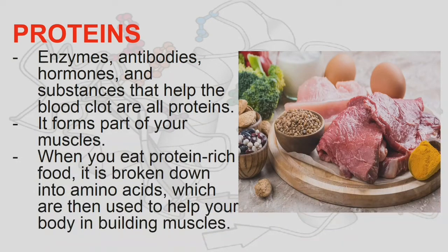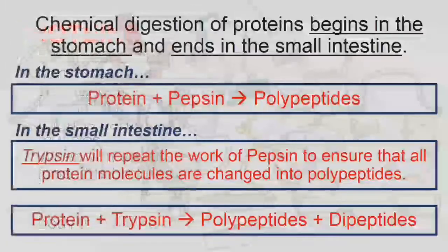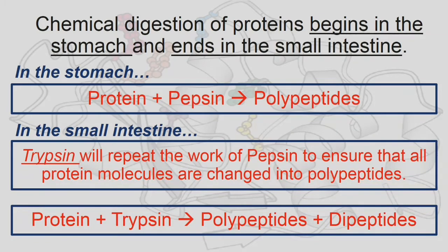Proteins — including enzymes, antibodies, hormones, and substances that help blood clot — form part of our muscles. When you eat protein-rich food, it is broken down into amino acids which help build muscles. Chemical digestion of proteins begins in the stomach and ends in the small intestine. In the stomach, protein is converted into polypeptides with the aid of the enzyme pepsin. The stomach's glands secrete gastric juice containing pepsinogen and hydrochloric acid; pepsinogen is converted into active pepsin, which breaks long proteins into short polypeptides.